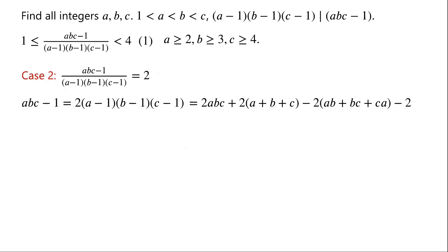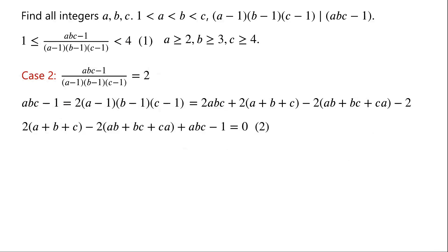Rearranging and simplifying the equation, we have: 2(a + b + c) - 2(ab + bc + ca) + abc - 1 = 0.